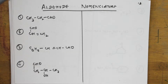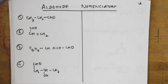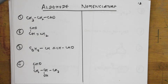Welcome back students. Today let us come back and do the next nomenclature, that is aldehyde nomenclature. We'll be doing the IUPAC nomenclature. Hope you would have seen the earlier video where I taught the different rules and I've also given you what is the order of taking up the functional groups. Please watch that video and then come back to this.